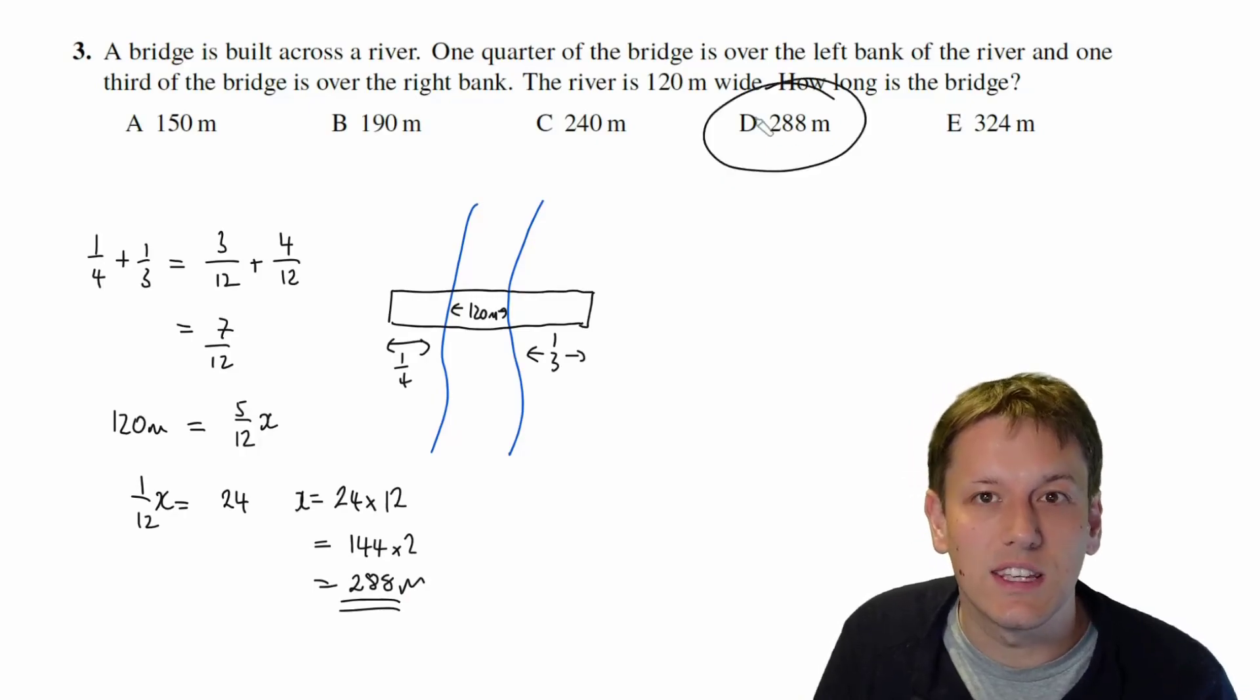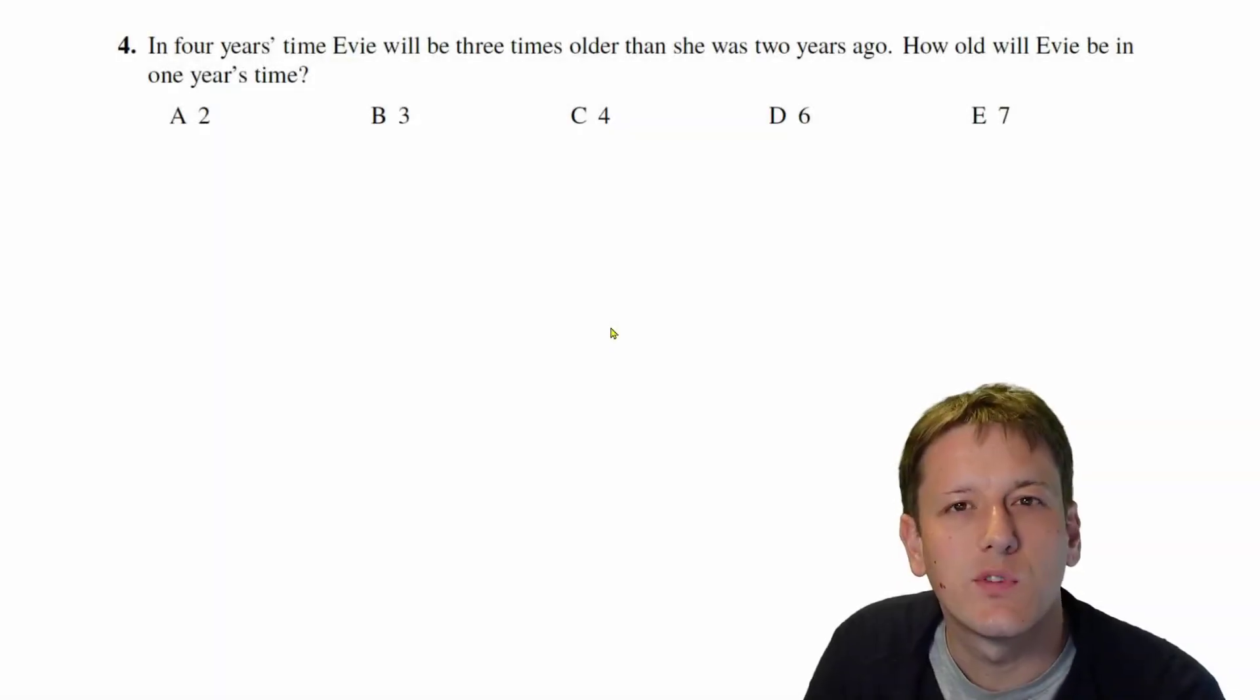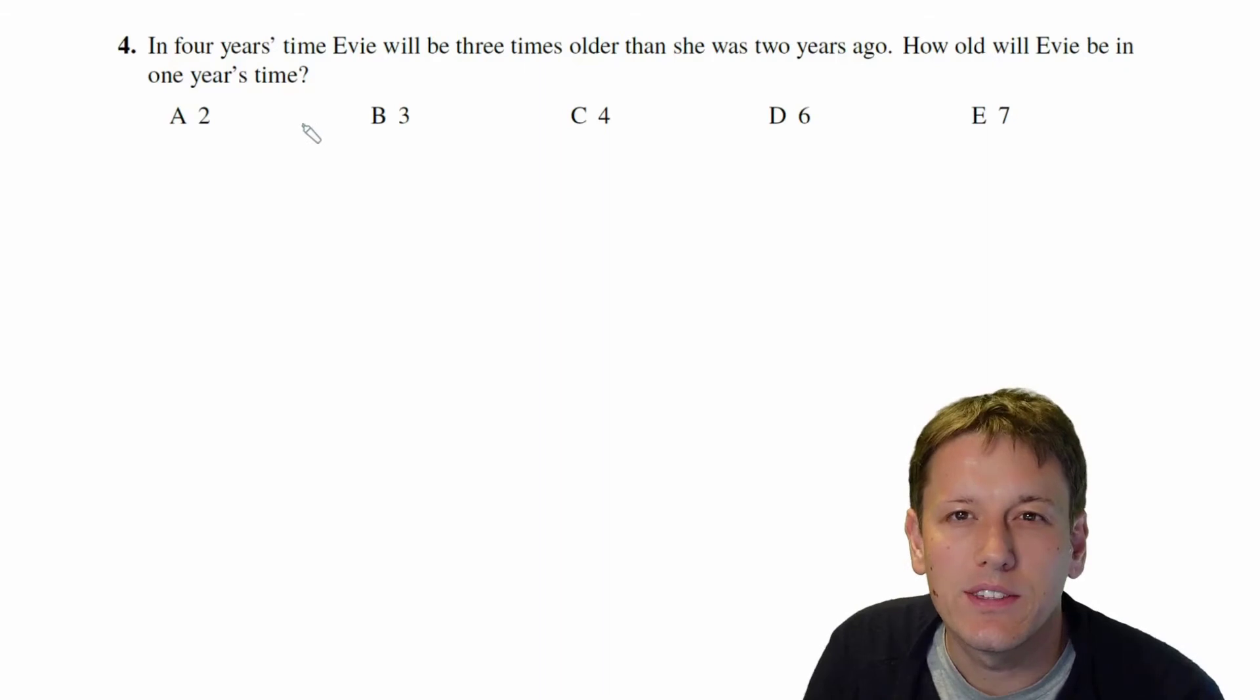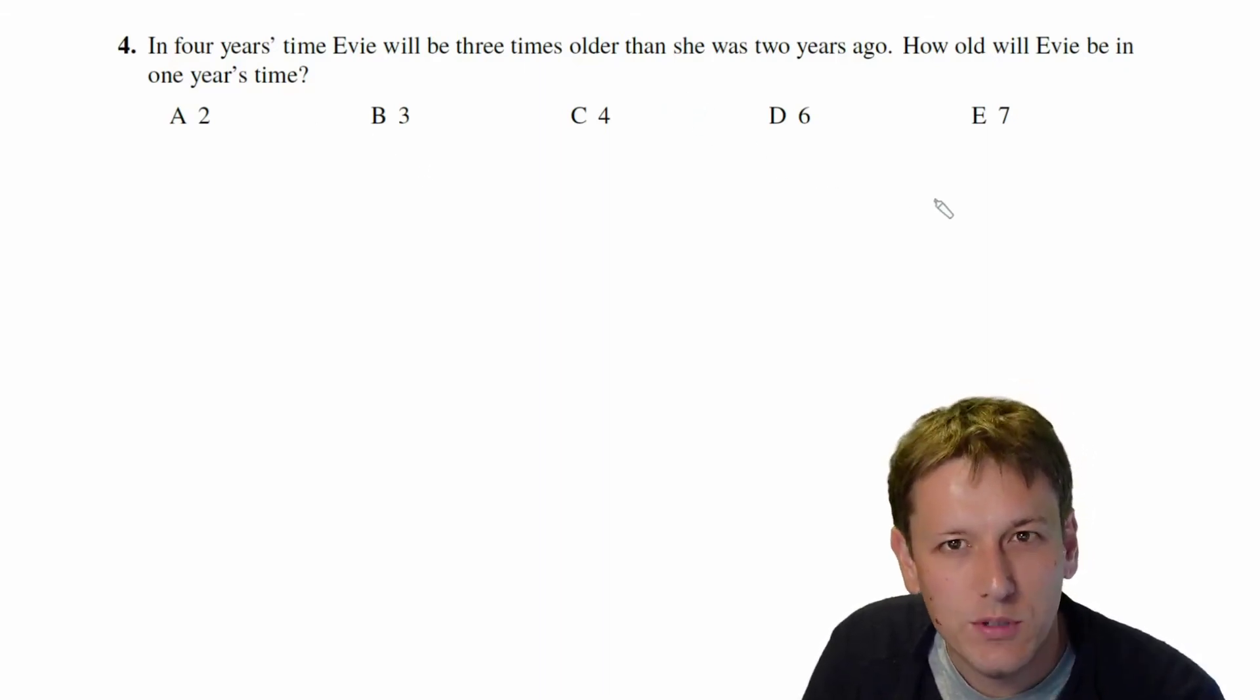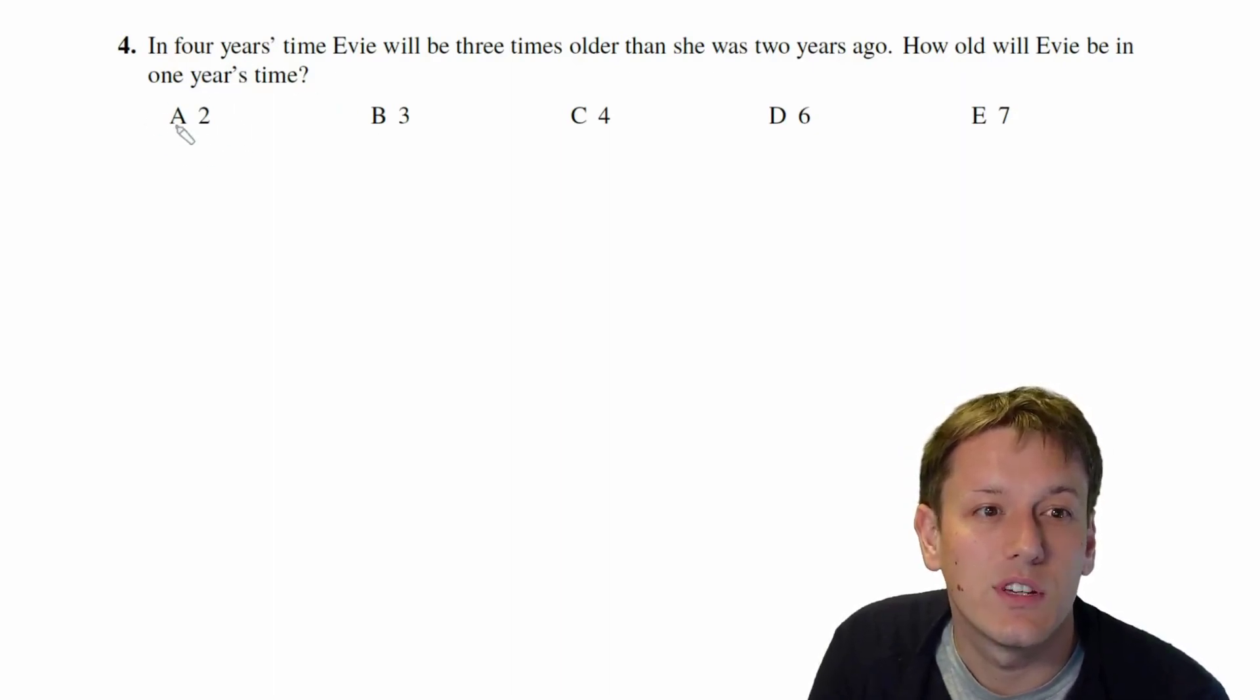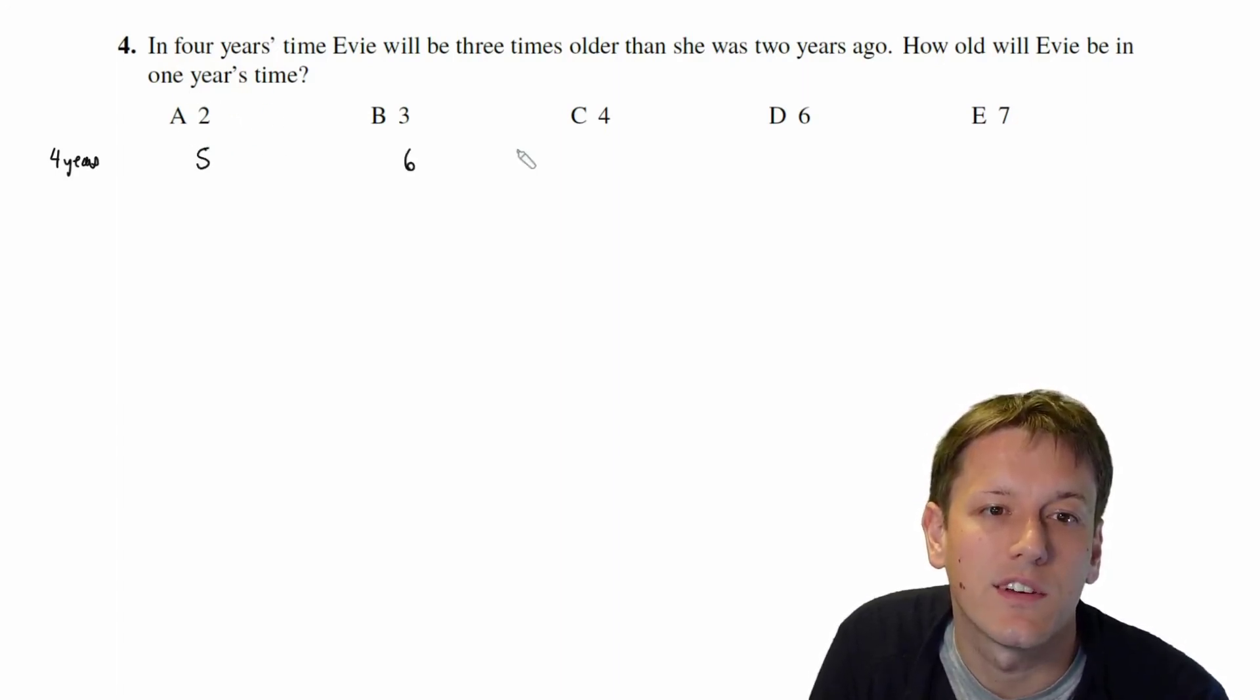Question four: in four years time Evie will be three times older than she was two years ago. How old will Evie be in one year's time? Two ways to do this question. I think a lot of people would tell you just to leap into algebra here, but the maths challenge questions have multiple choice answers here, the kangaroo has these multiple choice options, and we can save ourselves some time occasionally by just using those. So if this is how old she is in one year's time, we could say okay, how old will she be in four years time? In each of these cases, well she'll be three years older than she is in one year's time, so she'd be 5, 6, 7, 9, or 10 in these cases.